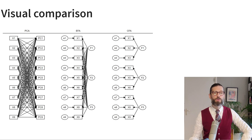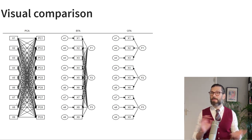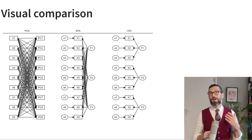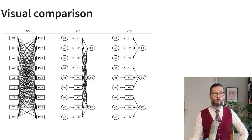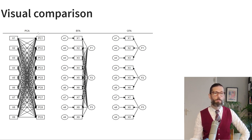We can also compare these techniques visually with box diagrams. Starting with principal components analysis: on the left we have nine indicator variables x1 through x9. Because we just rotate these data in space, what we're left with after the rotation are again nine different variables representing exactly the same information from the original nine variables but rotated along their different dimensions. We call those resulting nine variables principal components. Each of these principal components is a linear combination of all nine items, which is why we see arrows pointing from each of the nine items to each of the nine principal components. Some items can contribute more to one component than to another.